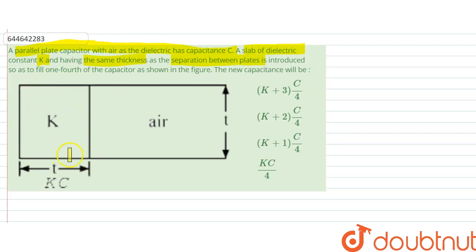The slab is introduced so as to fill one fourth of the capacitor as shown, so this is the capacitor. What we could say is that it has filled the one fourth section, the rest is the air itself.